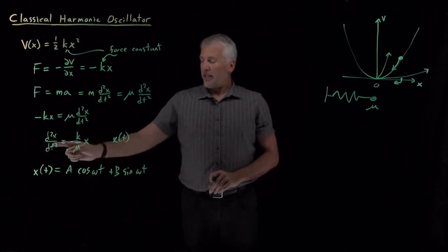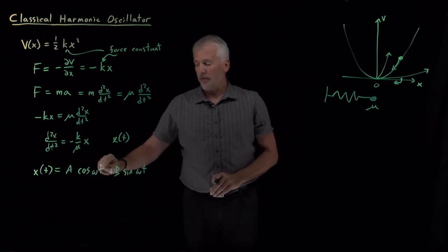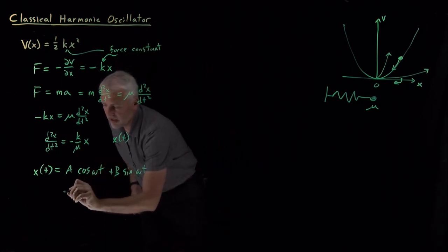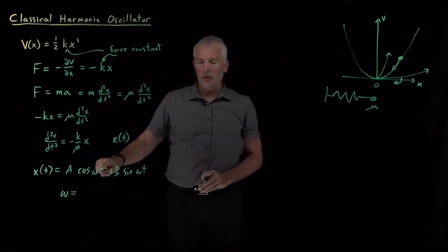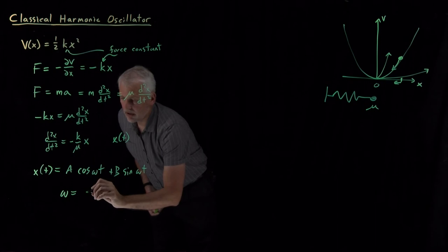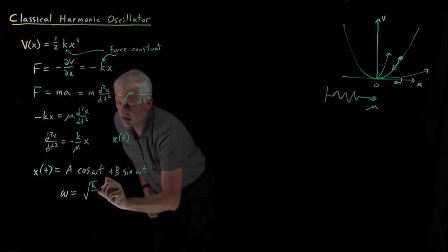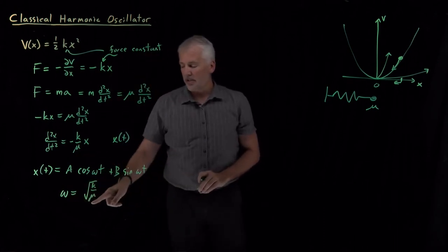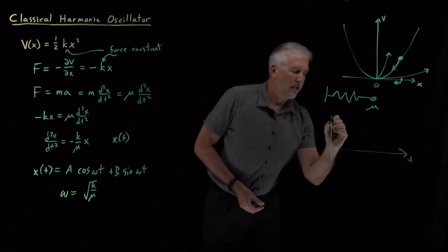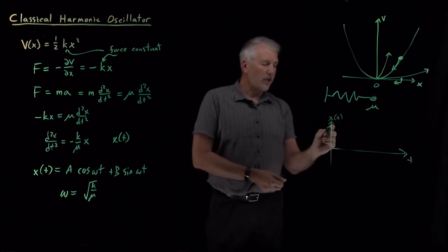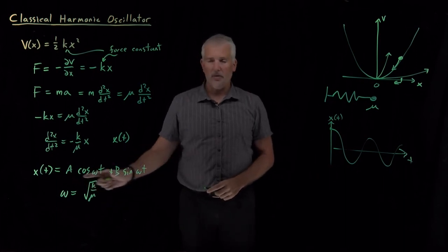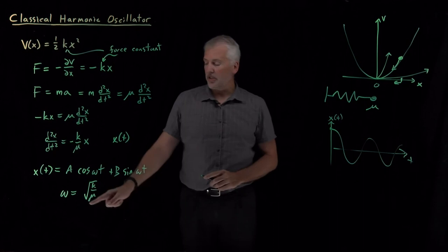Cosines and sines, when differentiated twice, return the negative of the original values, pulling out factors of ω. Solving for what ω must be: taking two derivatives pulls out −ω², so ω² = k/μ, meaning ω = √(k/μ). The angular frequency with which the particle oscillates after being stretched to some positive position and released — going negative, positive, negative, positive — is given by ω = √(k/μ).